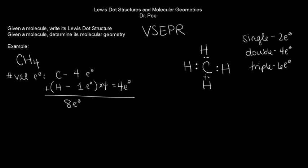We'll start by placing single bonds between the central atom and all the other atoms — two electrons between carbon and each hydrogen. Then we count up all the electrons used: 1, 2, 3, 4, 5, 6, 7, 8. We have eight electrons already placed, so we're done.